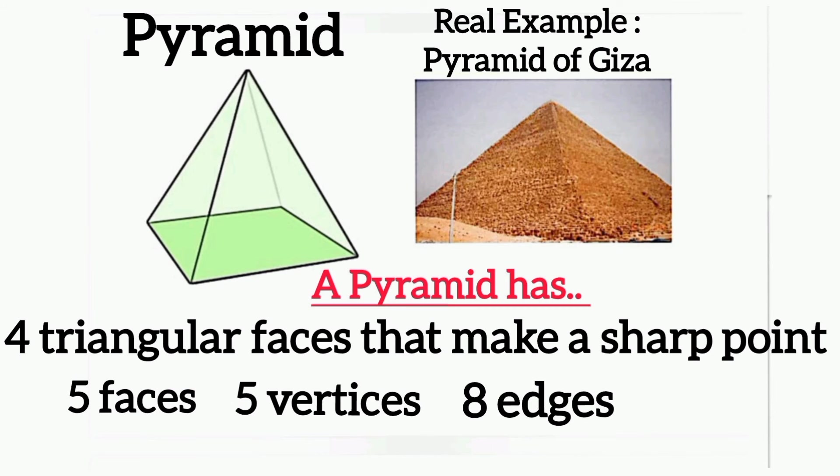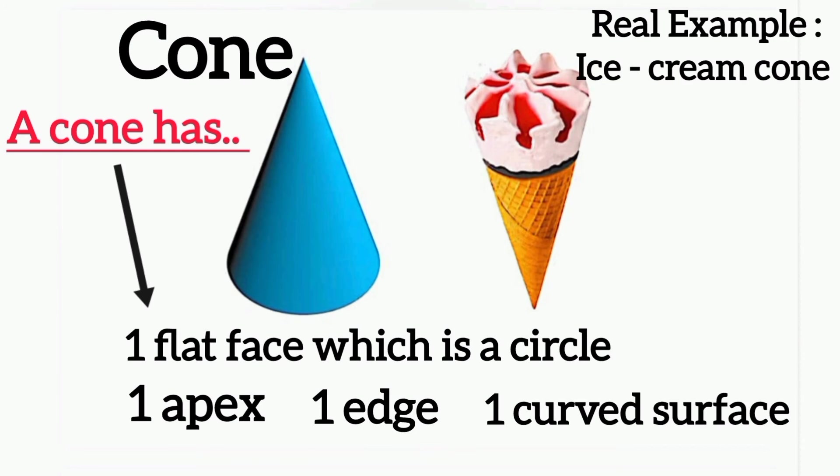Cone: a cone has one flat face which is a circle. It has one apex, one edge, and one curved surface. A real example of a cone is the ice cream cone.